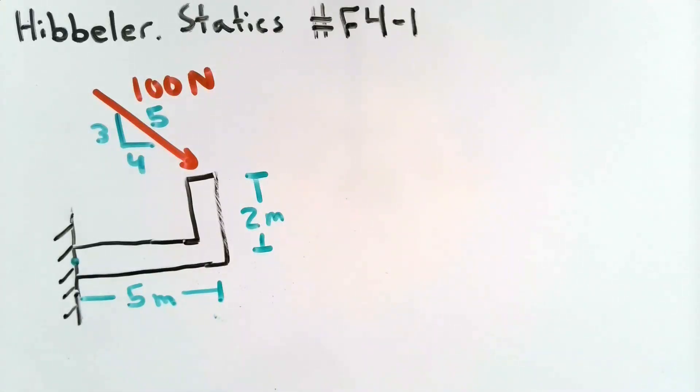This is problem number F4-1 from Hibbeler's Statics textbook, 14th edition. In this problem, we have a rigid body that experiences a force of 100 Newtons. We would like to find the moment that this force causes about a point located between the rigid body and the wall.